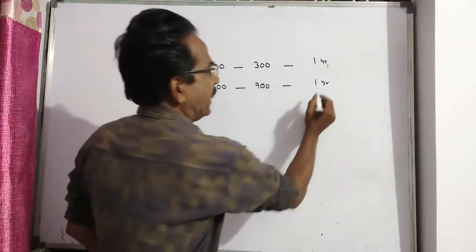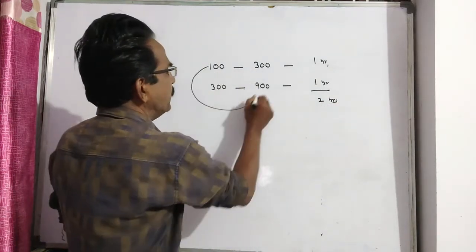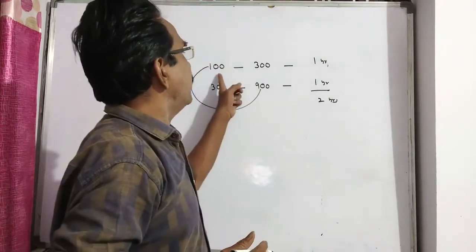That means in a span of two years, 100 becomes 900, that is nine times.